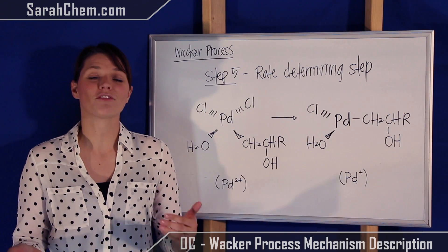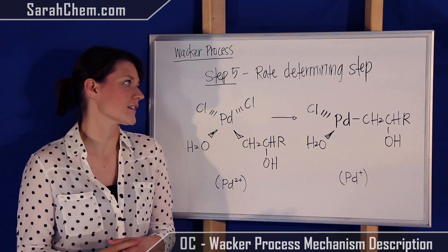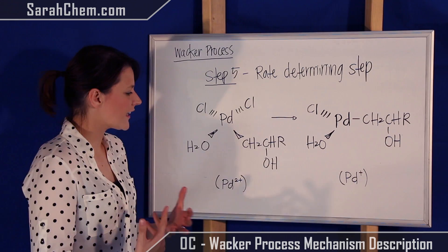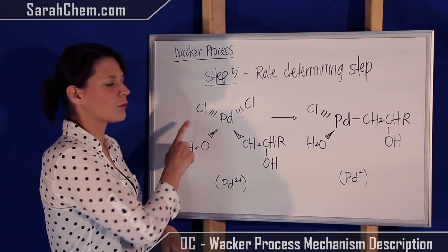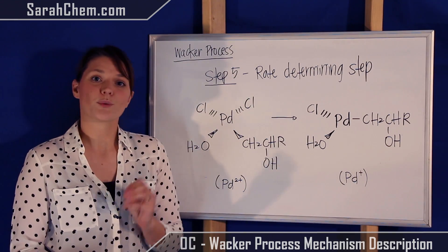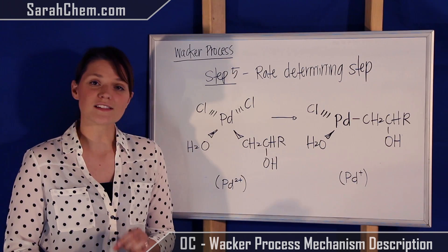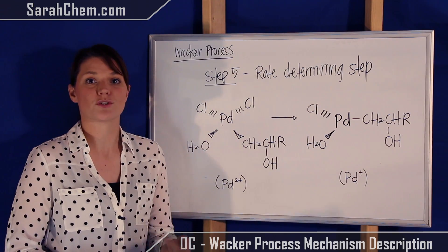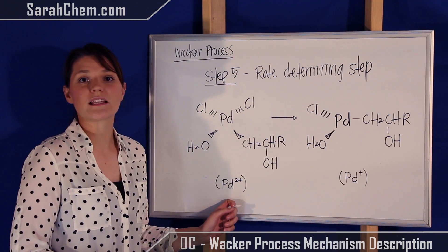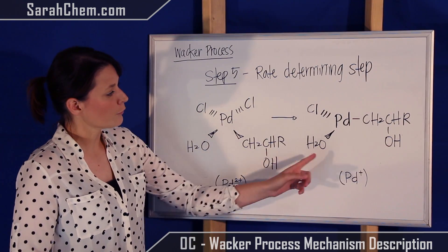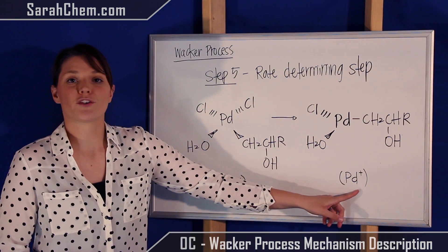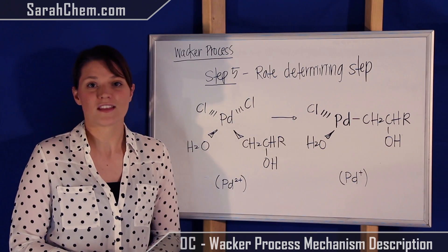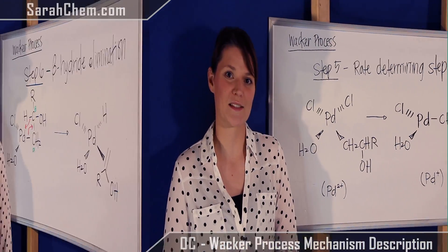Step five is the rate-determining step. What's essentially happening is that one of the chlorines is getting kicked off. Importantly, this means the palladium is being reduced — at this point it is Pd²⁺, and after removal of the chlorine ion you're left with Pd⁺.